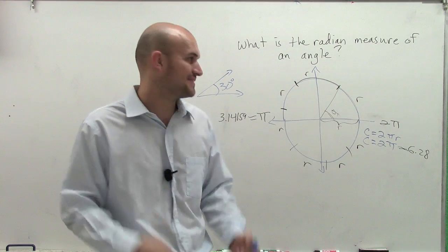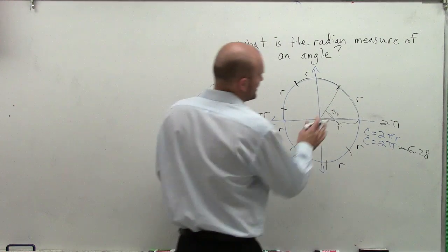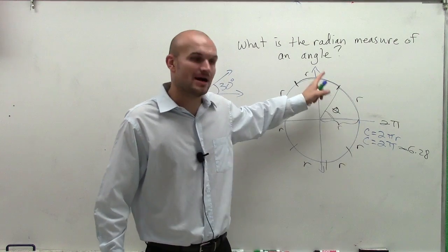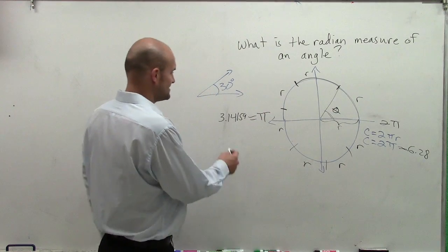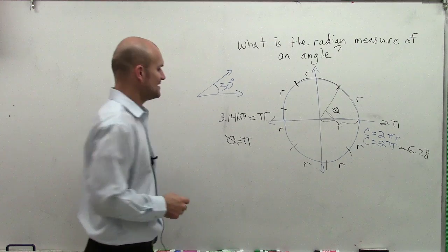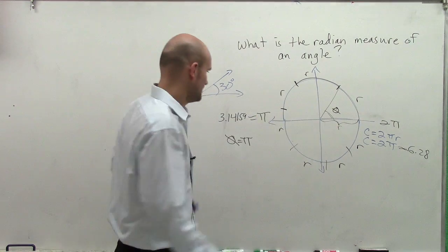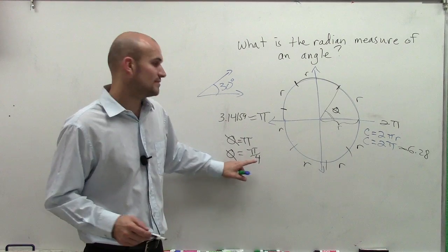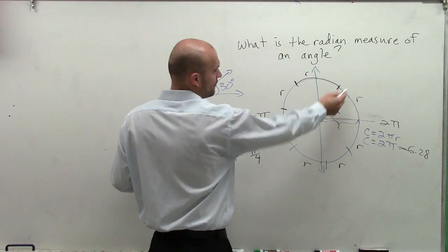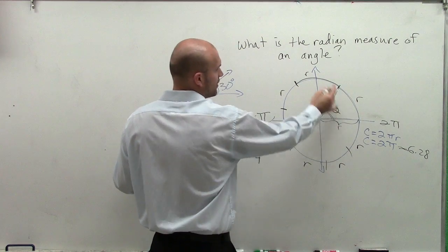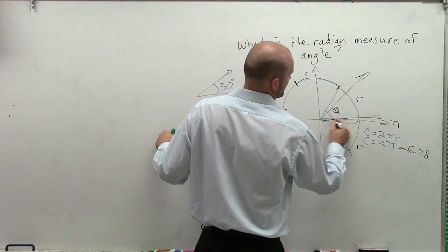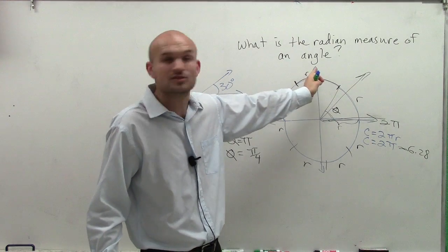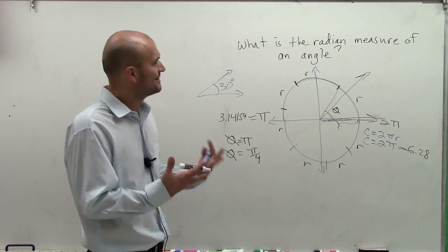So what is the radian measure of an angle? The radian measure of an angle is just our angle in terms of its radius around the circle. If my angle is π, we know that's going to be a straight angle. If my angle is π over 4, that means it's going to be one-fourth of that angle — roughly one-fourth of a radian — which would be some angle halfway between 0 and π over 2, which would be π over 4.